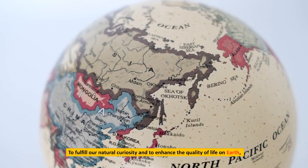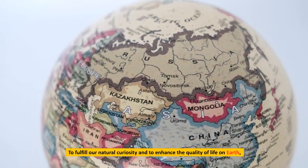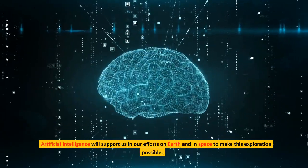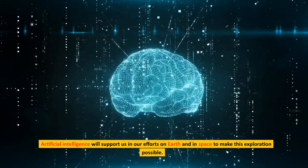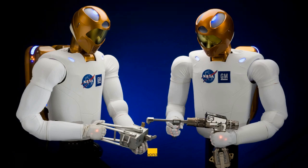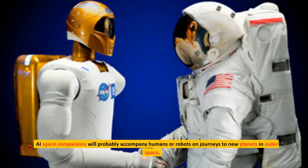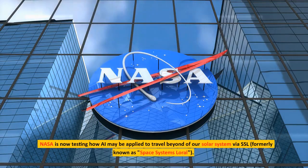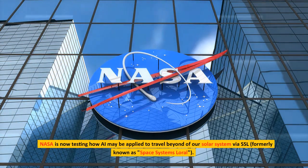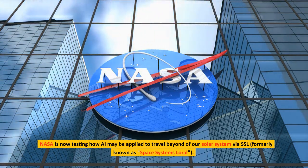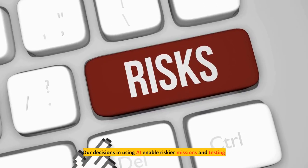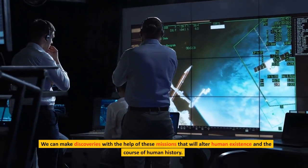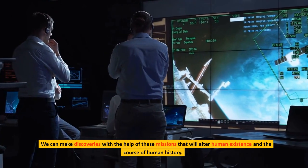To fulfill our natural curiosity and to enhance the quality of life on Earth, we will continue to plan ambitious missions as we continue to explore the cosmos. Artificial intelligence will support us in our efforts on Earth and in space to make this exploration possible. Robonauts. AI space companions will probably accompany humans or robots on journeys to new planets in outer space. NASA is now testing how AI may be applied to travel beyond our solar system via SSL, formerly known as Space Systems Laurel. Our decisions in using AI enable riskier missions and testing. We can make discoveries with the help of these missions that will alter human existence and the course of human history.